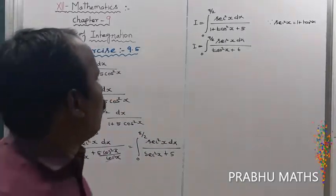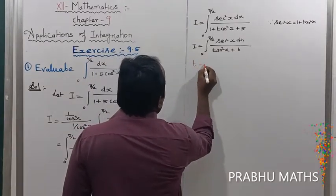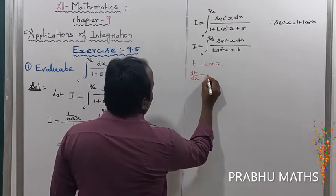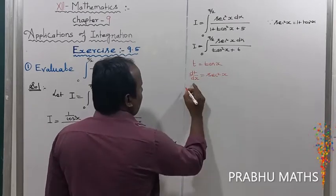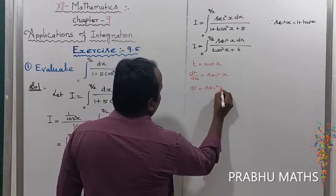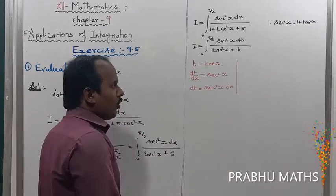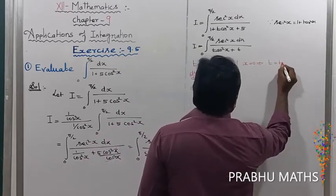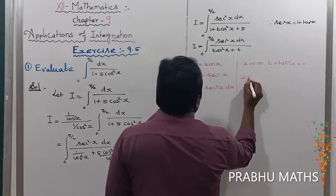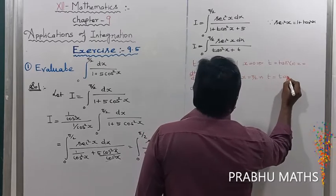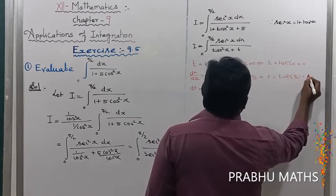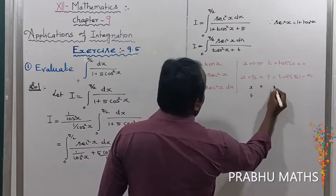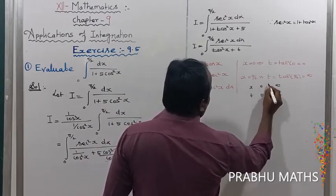This is in the form for substitution method. Applying the substitution method: let t = tan x. Differentiating with respect to x, dt/dx = sec²x, so dt = sec²x dx. For the limits: when x = 0, t = tan 0 = 0. When x = π/2, t = tan(π/2) = infinity. So the new limits are 0 to infinity.